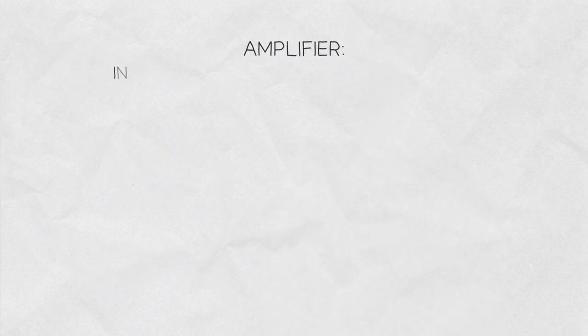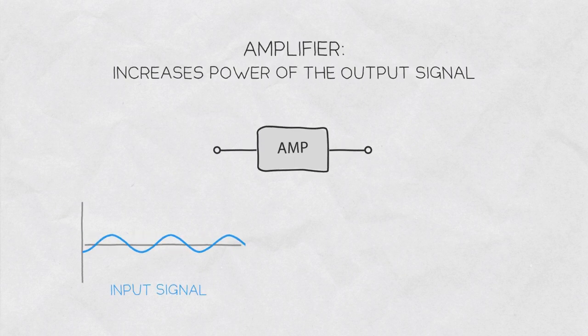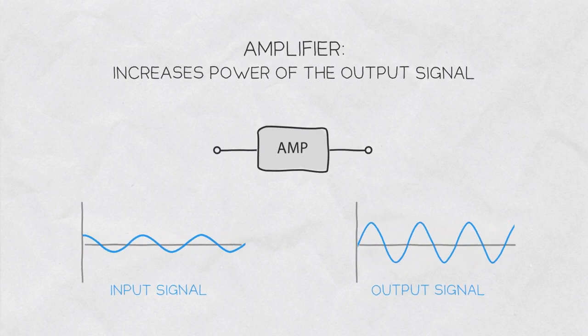Amplifier is the part of the radio that increases the power of the signal fed to it. A small signal at the input of the amplifier turns into a stronger one at its output.